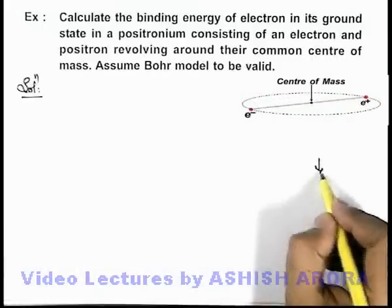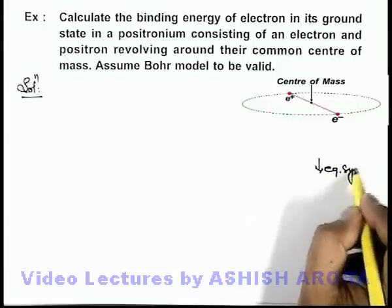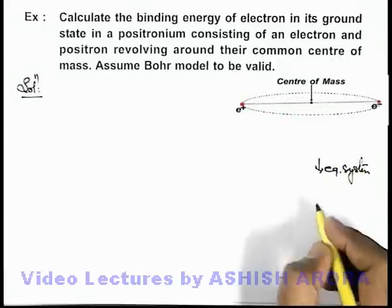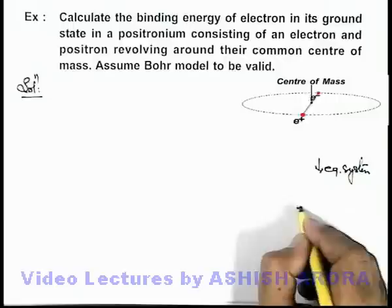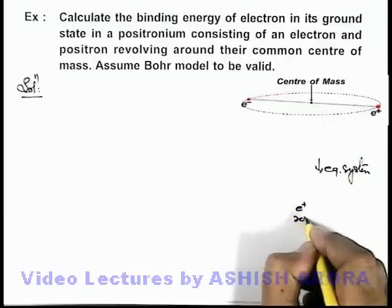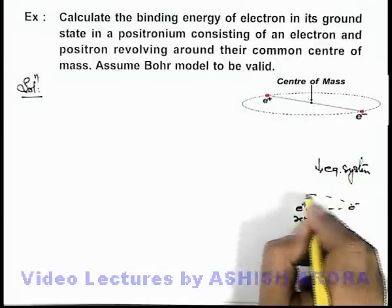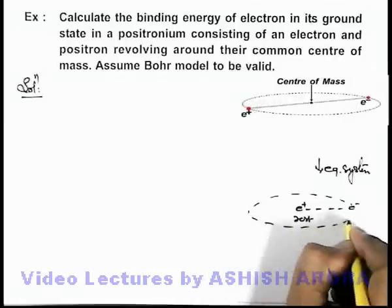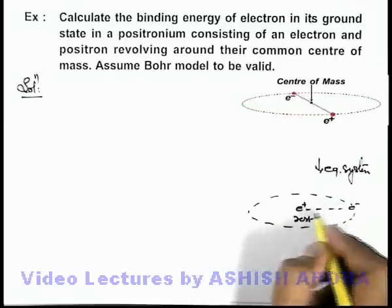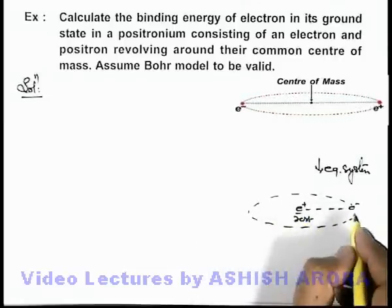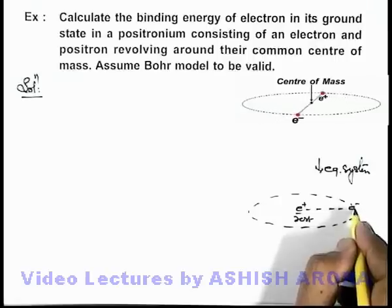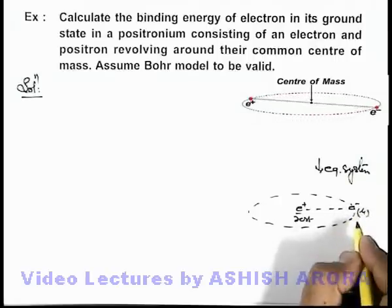And if we talk about its equivalent system, then we can state that the positron is considered to be at rest and the electron is revolving around the positron in a circular orbit. In this situation, if we consider positron to be at rest, the mass of this electron can be changed to reduced mass.